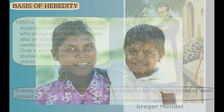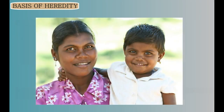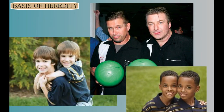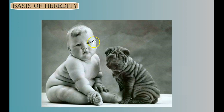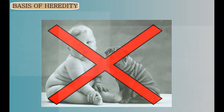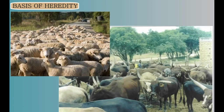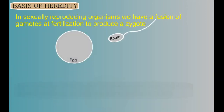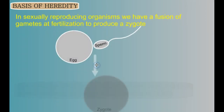Before we look at Mendel's work, let's consider what was known at the time. It was known that offspring tend to look like their parents and that siblings look alike. It was also known that selective breeding could shape the look and qualities of livestock and other agricultural products.